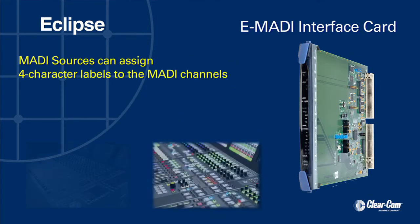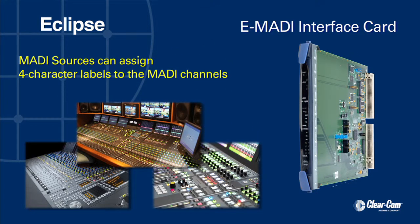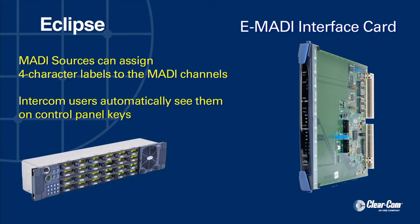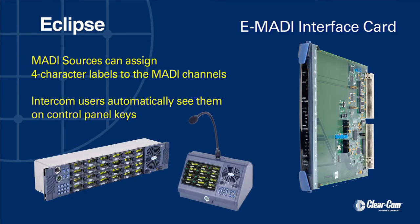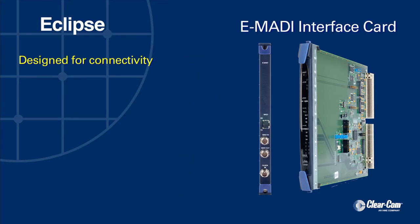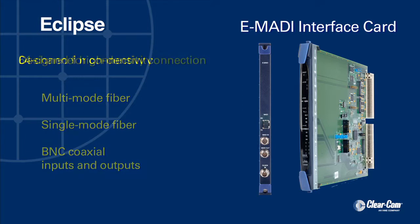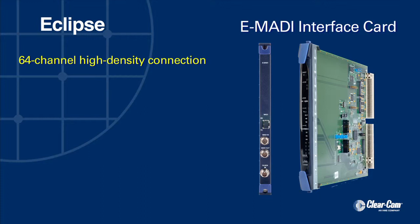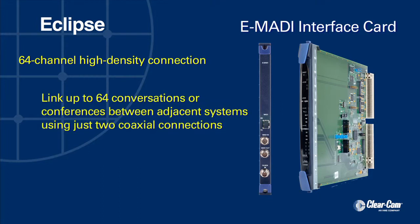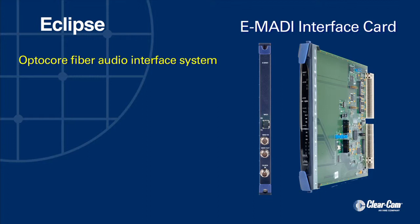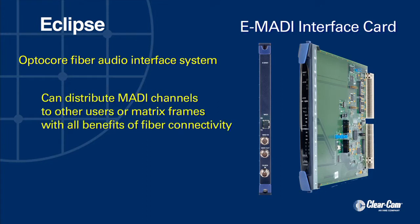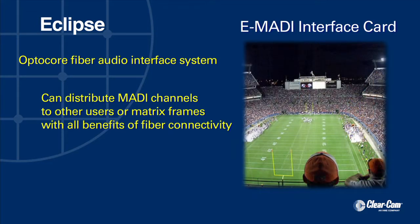MATI sources, including third-party audio consoles and routers, can assign four-character labels to the MATI channels and have intercom users see them on their control panel keys automatically. The E-MATI card supports multi-mode fiber, single-mode fiber, and BNC coaxial inputs and outputs. The 64-channel high-density connection is ideal for linking up to 64 conversations or conferences between adjacent systems using just two coaxial connections. Additionally, the Opti-Core fiber audio interface system can distribute the MATI channels to other users or matrix frames throughout a large venue or stadium with all the benefits of fiber connectivity.